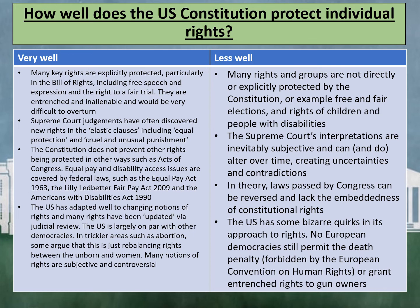However, it can be argued that the US Constitution does not protect individual rights very well, as many rights and groups are not directly or explicitly protected by the Constitution. For example, free and fair elections and the rights of children and people with disabilities. The Supreme Court's interpretations are inevitably subjective and can and often do alter over time, creating uncertainties and contradictions.